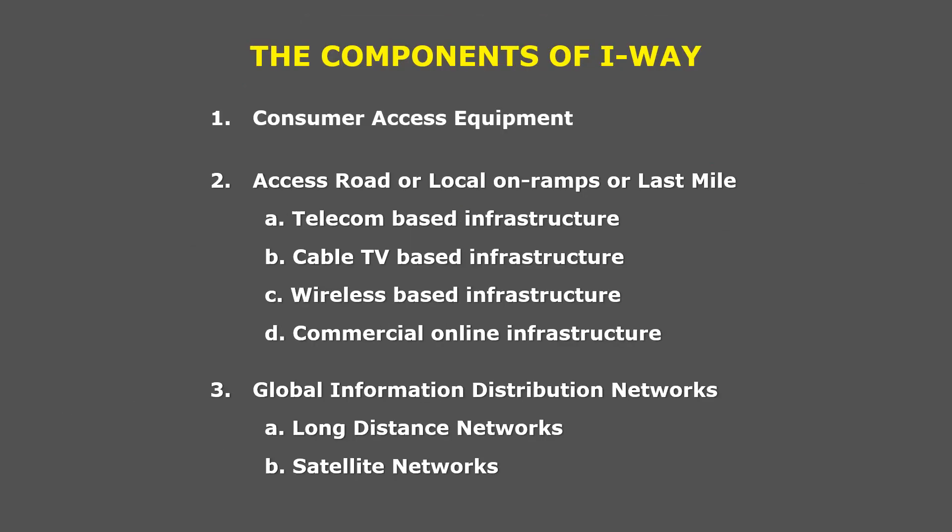The information superhighway consists of three major components. The first is consumer access equipment. The second major component is the access road, also known as local on-ramps or last mile, which consists of four sub-components: telecom-based infrastructure, cable TV-based infrastructure, wireless-based infrastructure, and commercial online infrastructure. The third major component is the global information distribution network, which consists of two sub-components: long-distance networks and satellite networks.